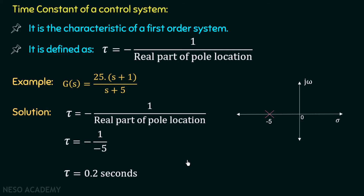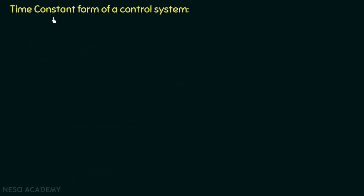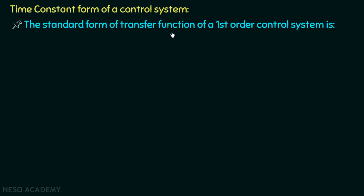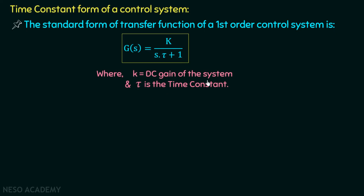We will now move on to the time constant form of a control system. The time constant form is the standard form of the transfer function of a first order control system, defined as G(s) = k / (s*tau + 1), where k is the DC gain of the system and tau is the time constant.